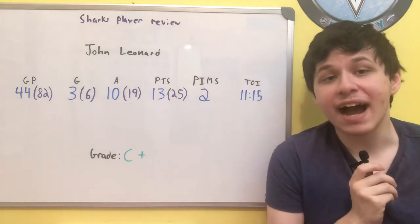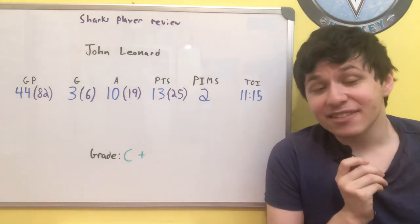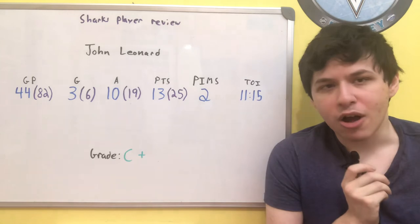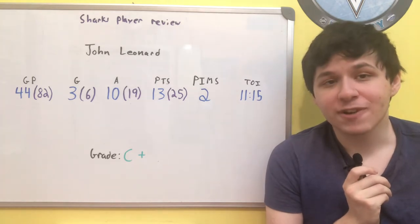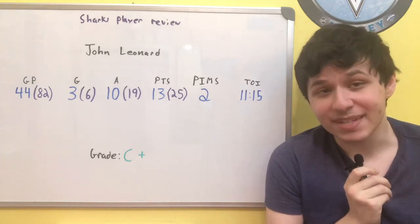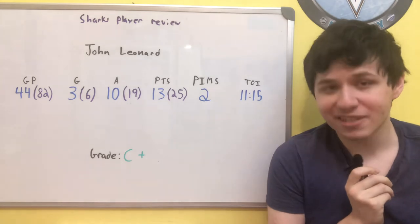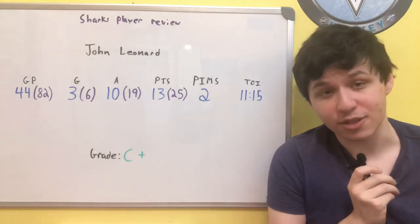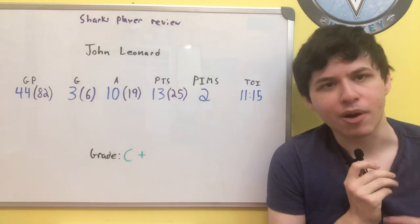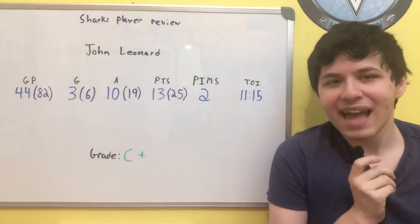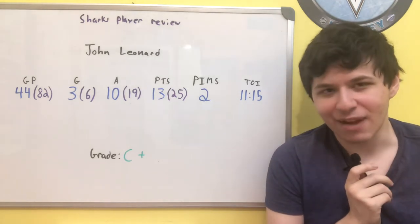And as we move on to the time on ice, this is where it kind of is a bit awkward for John Leonard, because if you take a look at Sharks players who played, at the very least, 20 games this season, John Leonard was the lowest time on ice out of everybody. This is below players like Matt Nieto, Patrick Marleau, Marcus Sorensen, Noah Gregor, and it is a bit disappointing in that regard.